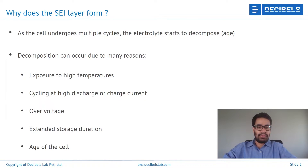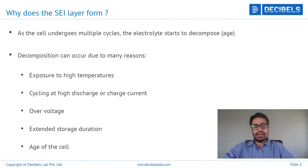Additionally, the age of the cell is a factor — older cells, or basically cells that have degraded more, will be more likely to form a much more dominant SEI layer on the anode surface. These are many of the contributing factors for decomposition of the electrolyte.